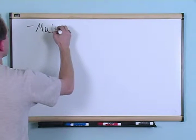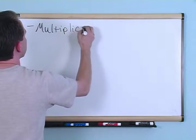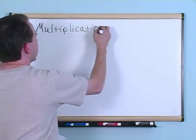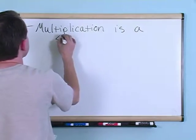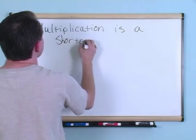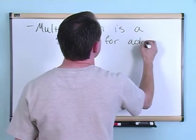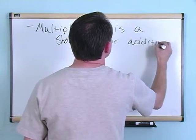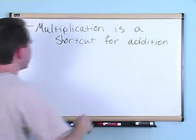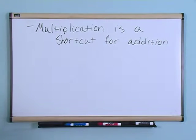So the first thing that I want to write on the board is the following: Multiplication is a shortcut for addition. That's exactly what I told you a minute ago. It's a shortcut for addition. And what do I mean by that?